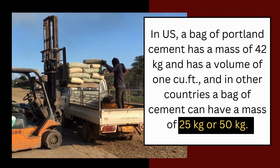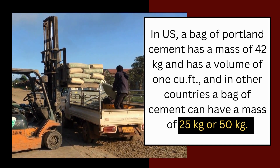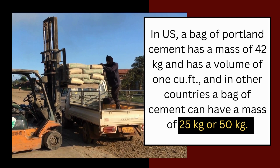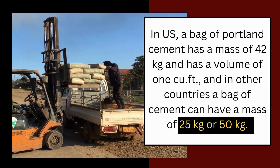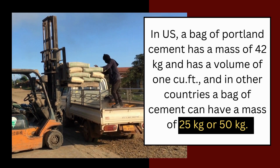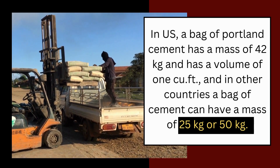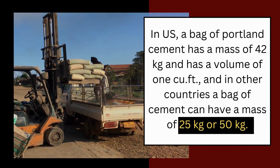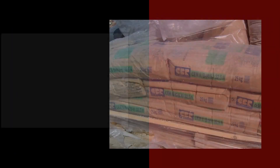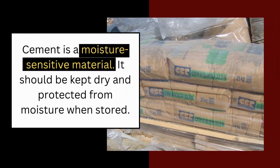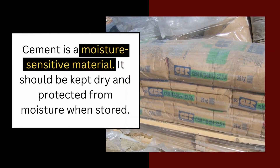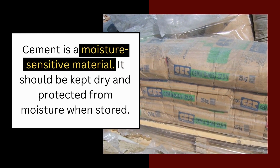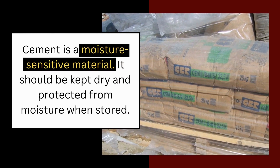In the United States, a bag of Portland cement has a mass of 42 kilograms and has a volume of one cubic foot. In other countries, a bag of cement can have a mass of 25 kilograms or 50 kilograms. Cement is a moisture-sensitive material; it should be kept dry and protected from moisture when stored.